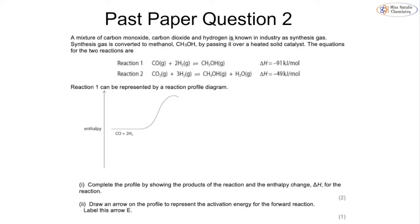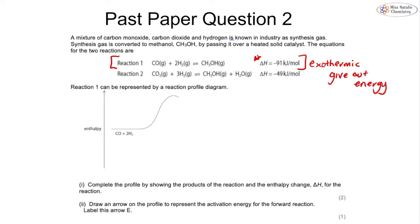Now let's look at past paper question two, which links into energetics. We have two different reactions and we focus on reaction one. Because the enthalpy change is exothermic — meaning energy is given out — the energy of our products is going to be less than the energy of our reactants.